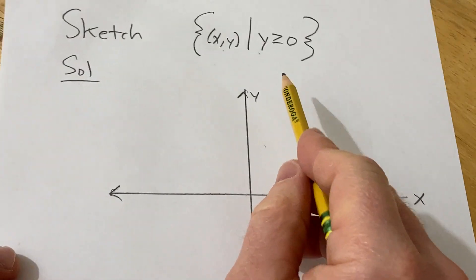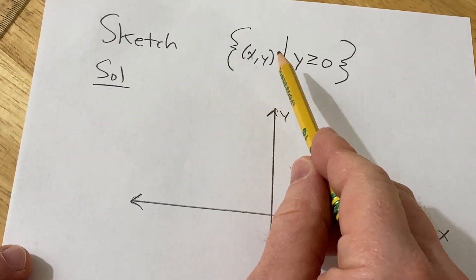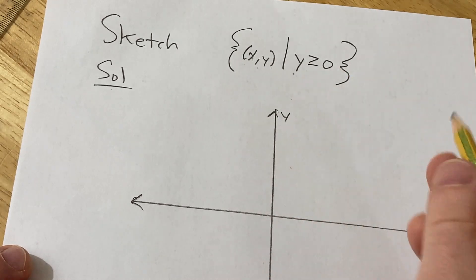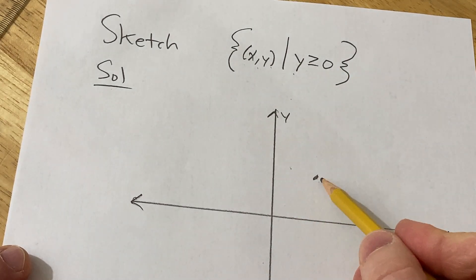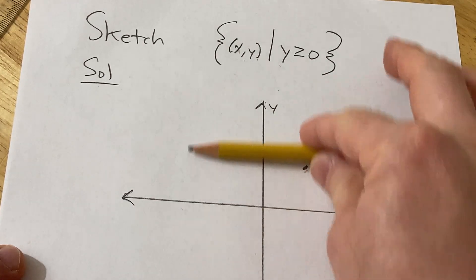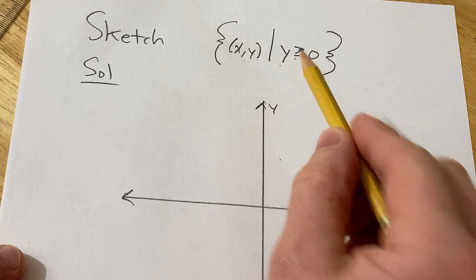And this set basically contains all of the ordered pairs such that y is greater than or equal to zero. So basically right here this ordered pair would be in this set because y is greater than or equal to zero. So it's everything up here, including y equals zero.